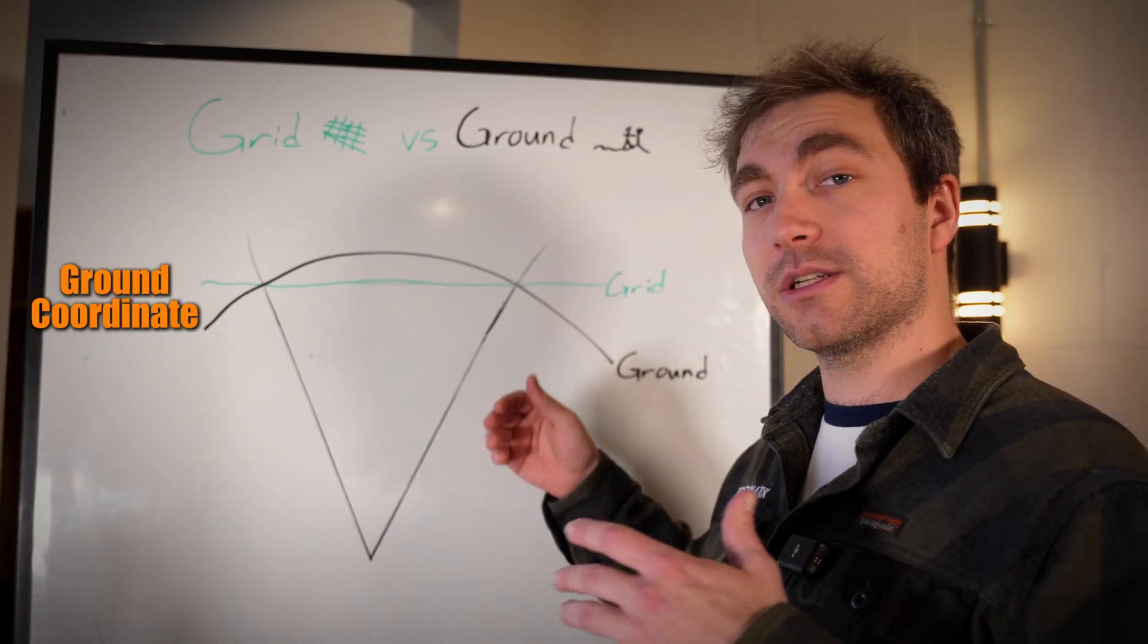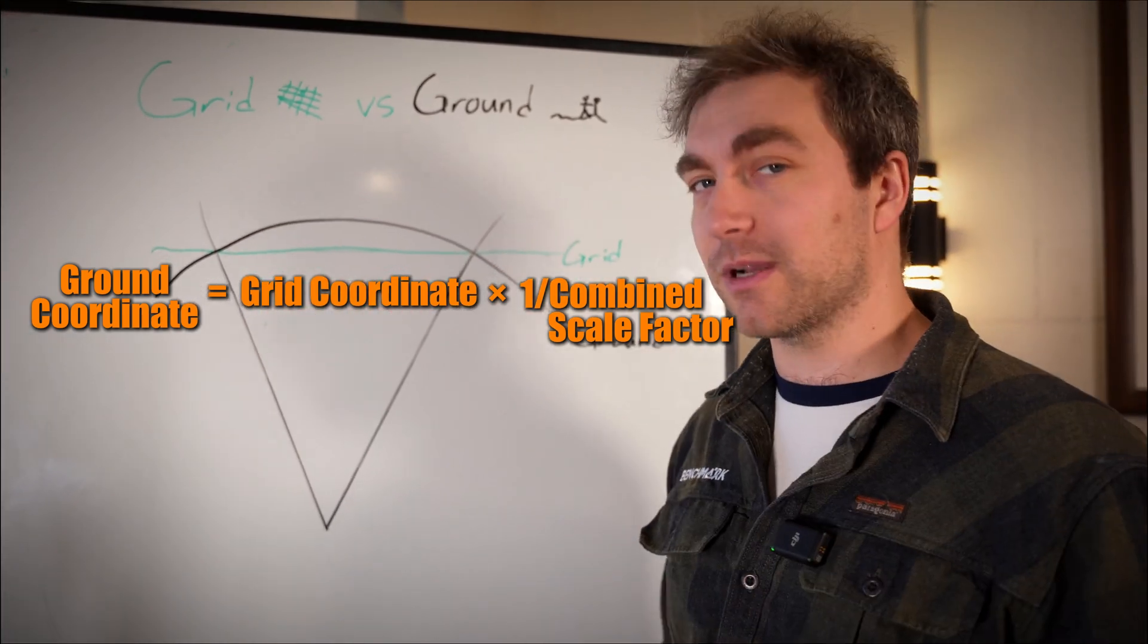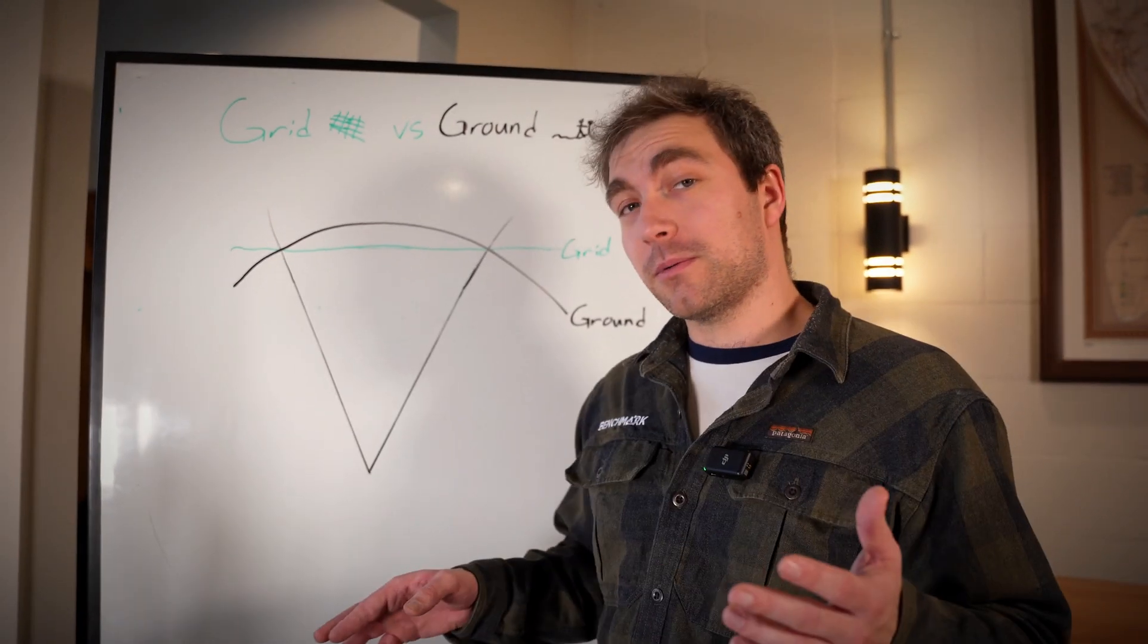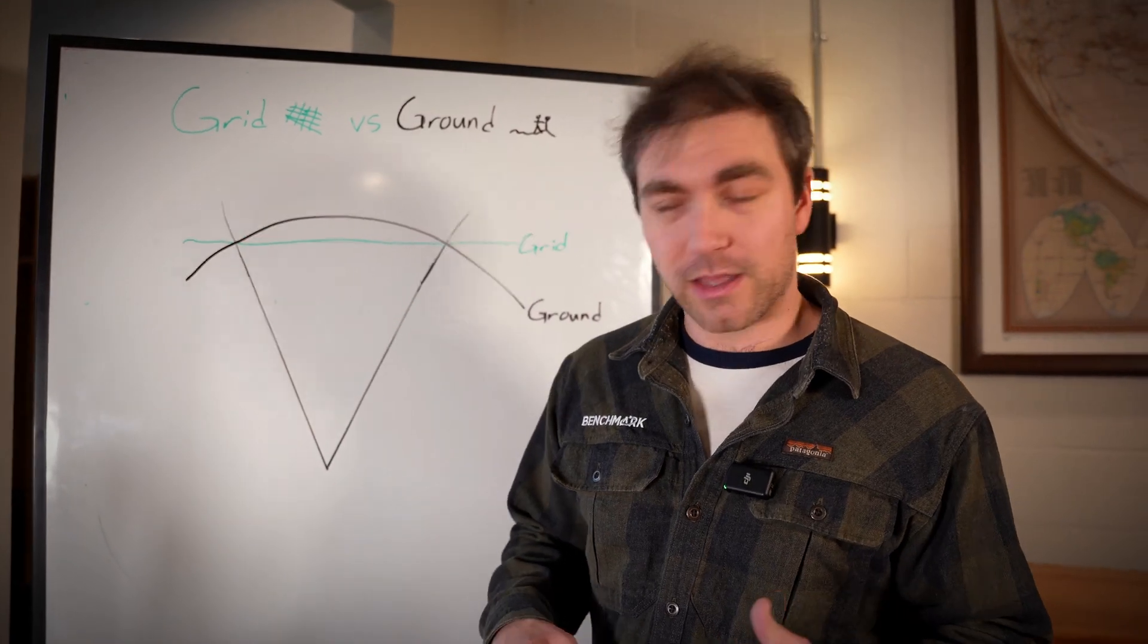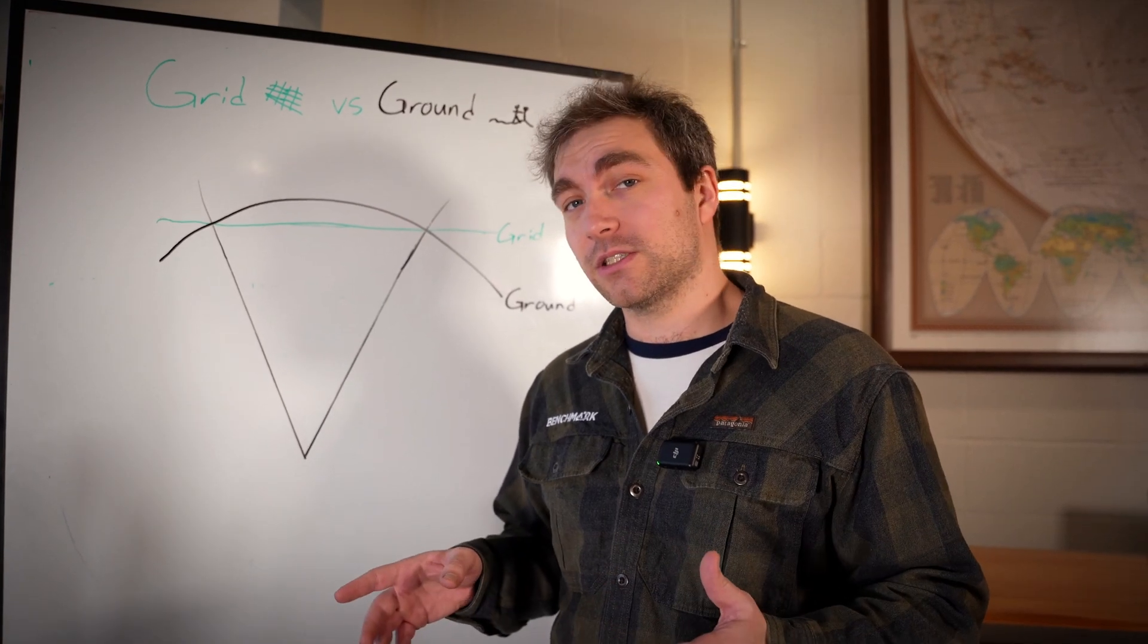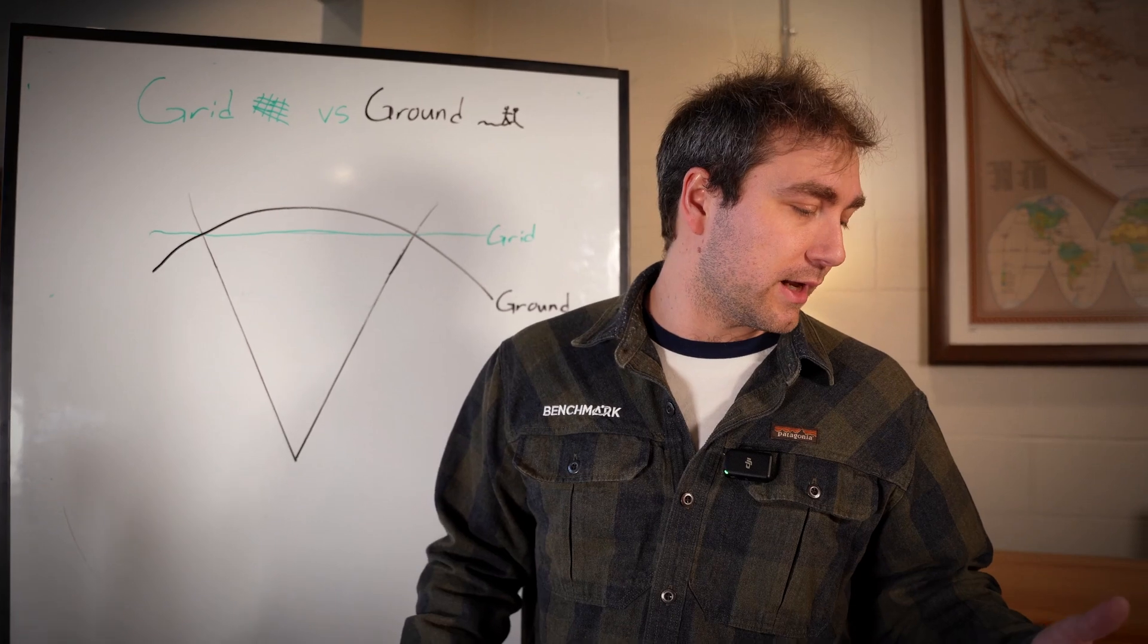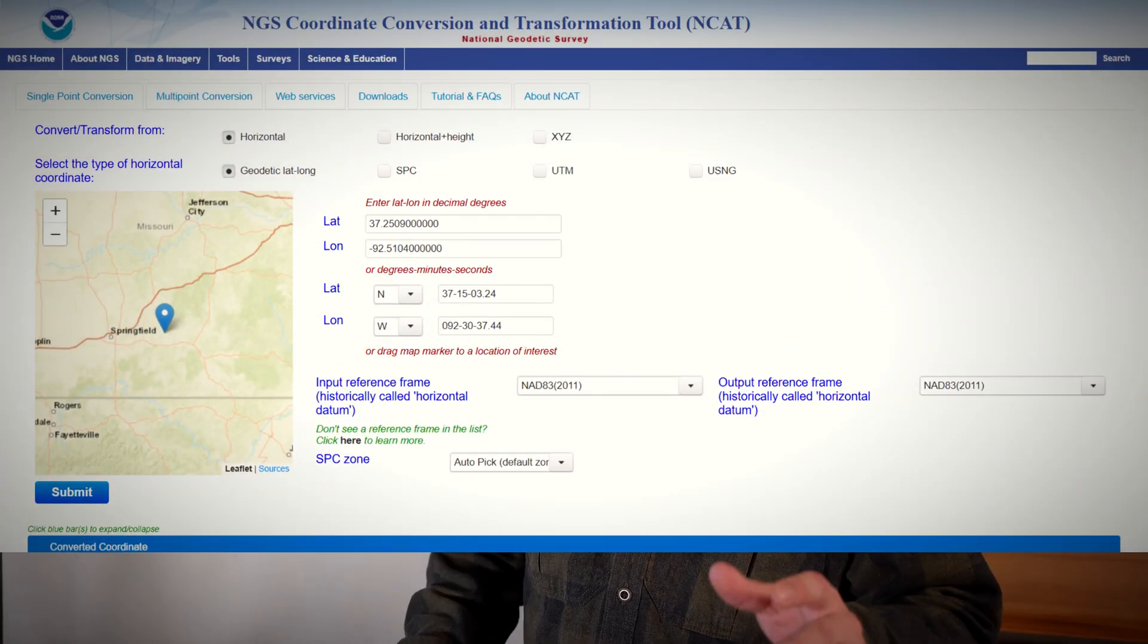To get a ground coordinate, you're going to take your grid coordinate and multiply it by the inverse of the combined scale. You've probably seen combined scale factors before—they usually look like 0.999 something, and they look like they wouldn't really affect your coordinate all that much.